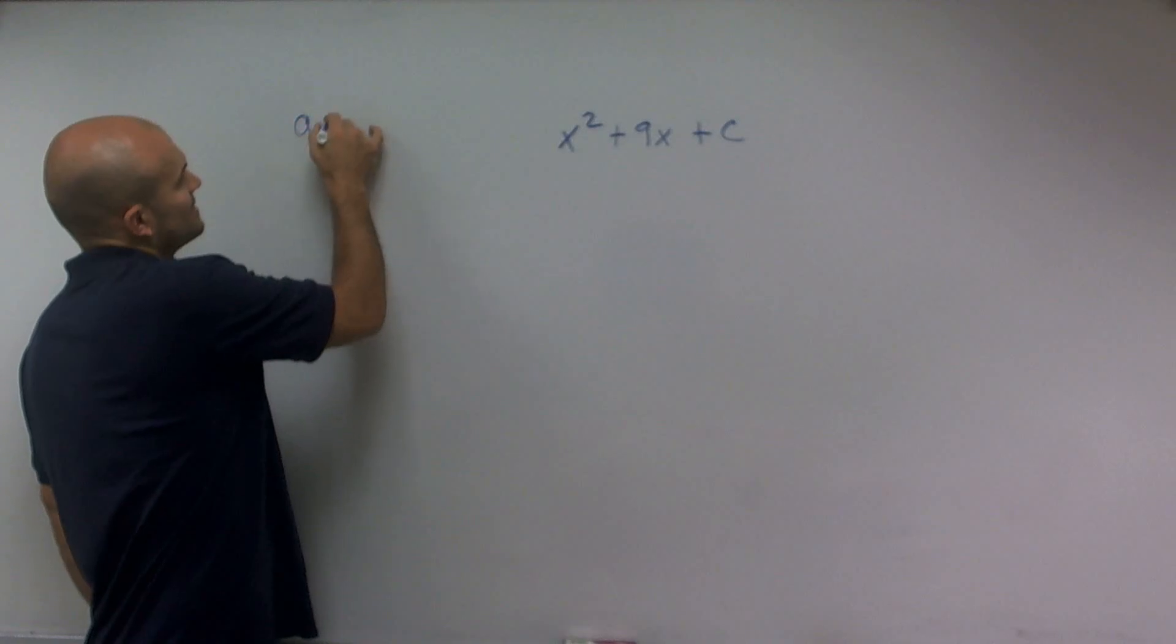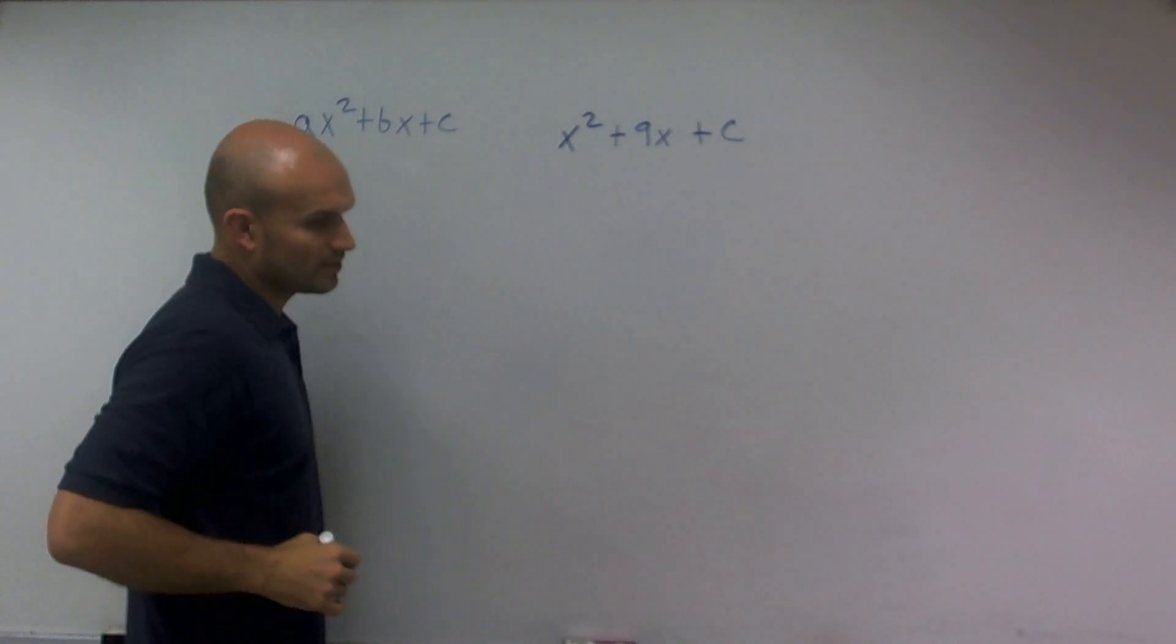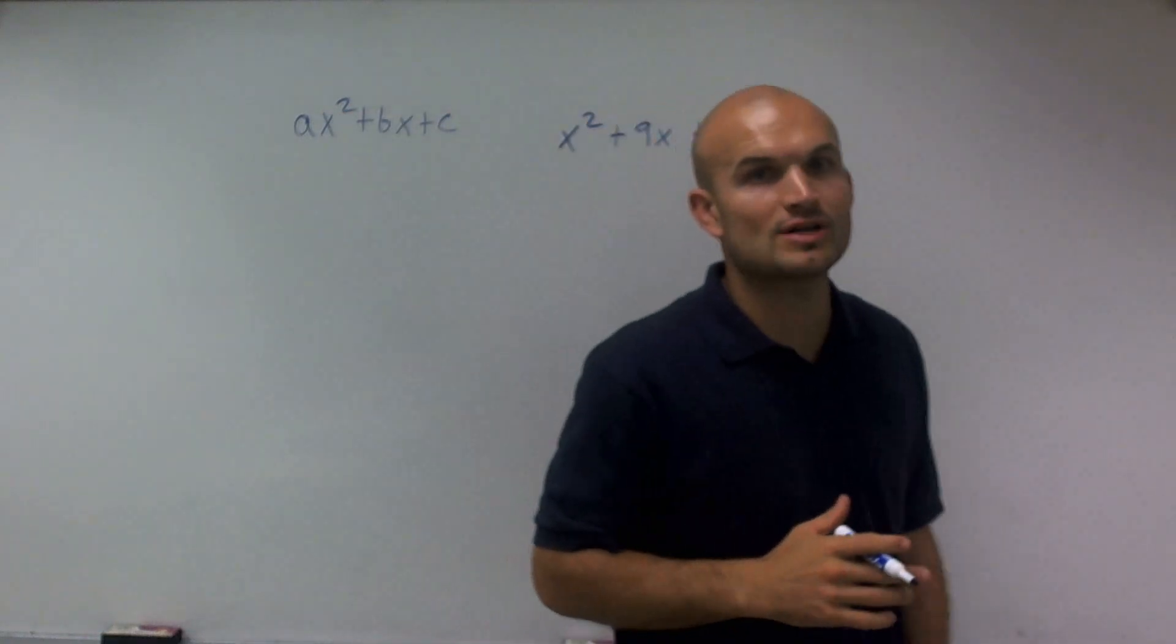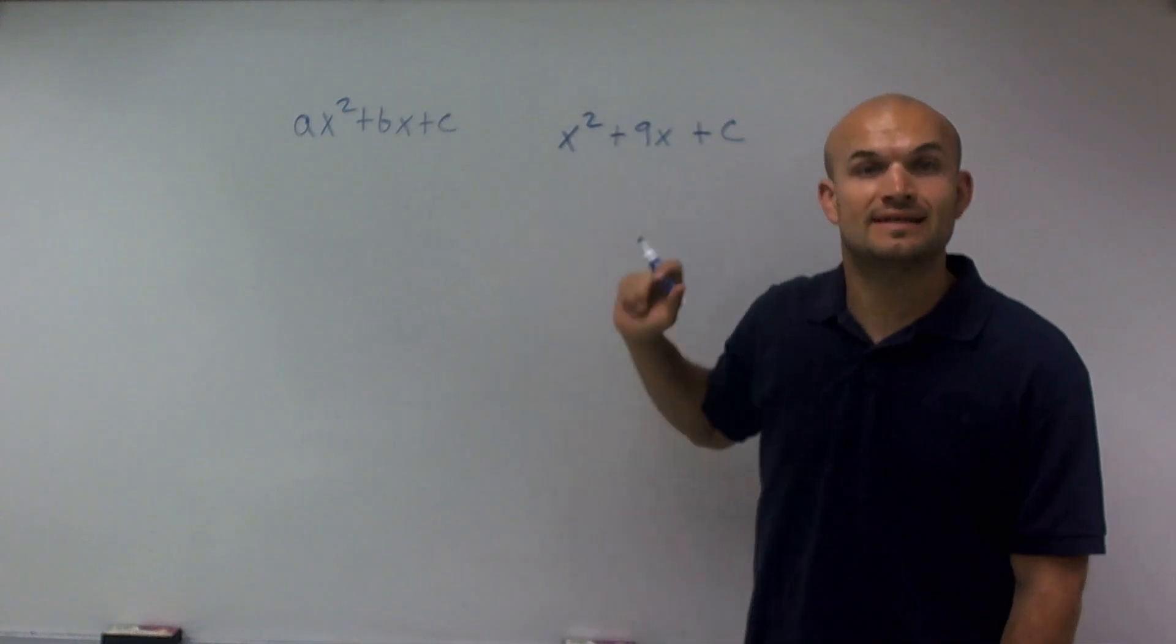But the main important thing we need to understand is to complete the square, we've got to have a polynomial in the form of our quadratic form right here, where especially it's important that a is going to equal 1.